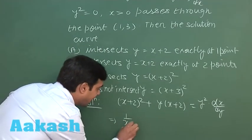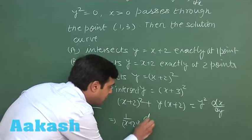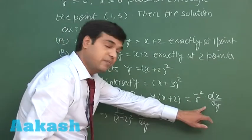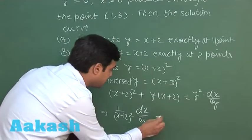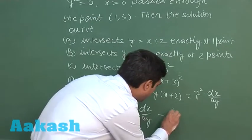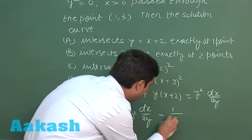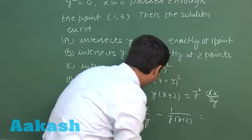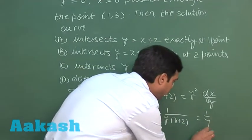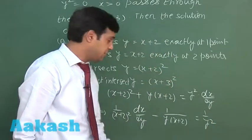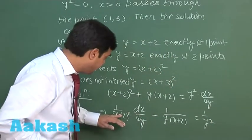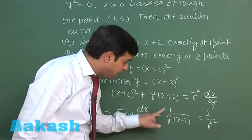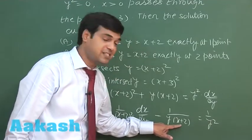After dividing by y²·(x+2)², we get: [1/(x+2)²]·(dx/dy) - [1/y]·[1/(x+2)] = 1/y². Now substituting t = -1/(x+2) to simplify the equation.